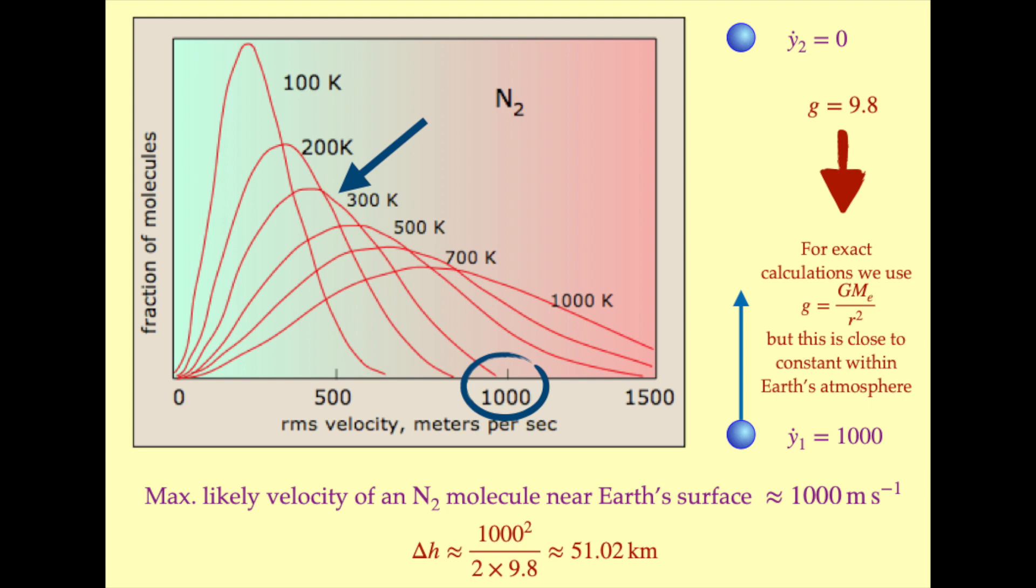Let us consider the case of a nitrogen molecule that has a velocity of 1000 meters per second straight upward. How high would this molecule get before the force of gravity brings it to rest? We can use the formula derived in the previous slide to determine that this distance is about 51 kilometers.